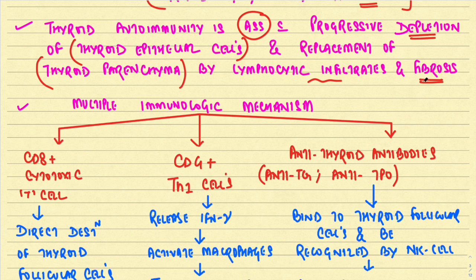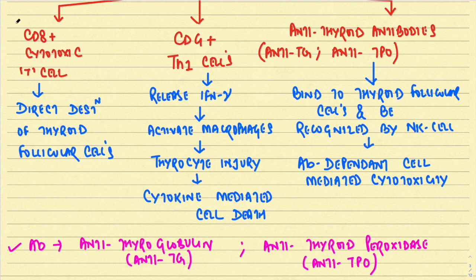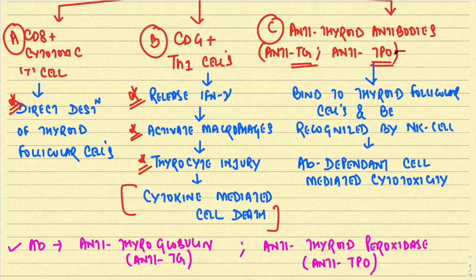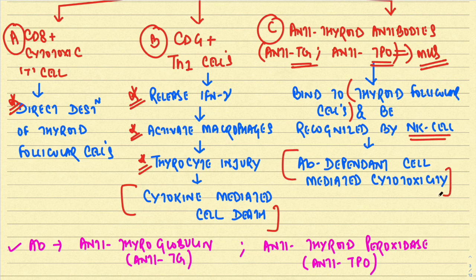Multiple immunological mechanisms have been proposed for Hashimoto's pathogenesis. First, CD8+ cytotoxic T cells directly destroy thyroid follicular cells. Second, CD4+ T helper 1 cells release interferon gamma, activating macrophages leading to thyrocyte injury — cytokine-mediated cell death. Lastly, anti-thyroid antibodies — anti-thyroglobulin and anti-thyroid peroxidase — bind to thyroid follicular cells, which are recognized by natural killer cells, leading to antibody-dependent cell-mediated cytotoxicity. These antibodies are classically present in Hashimoto's and are important MCQ points.